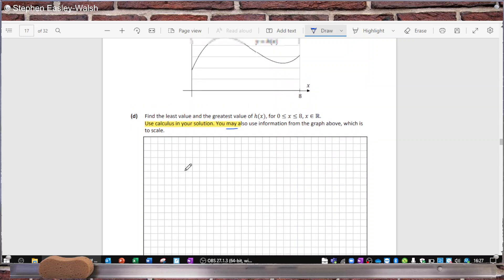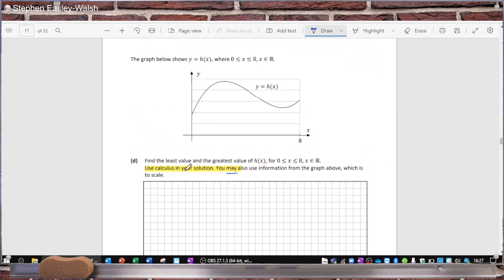Number 2. I don't know if it's a mistake, but this question here says use calculus in your solution, you may use the information from the graph above which is to scale. I just think the use of the word 'may' here was awfully misleading. My understanding of this sentence - use calculus in your solution, you may use the graph - is that you could use calculus to get the two roots at the two turning points, and then you can use the graph to figure out which is the maximum. Which is actually what I thought they were saying.